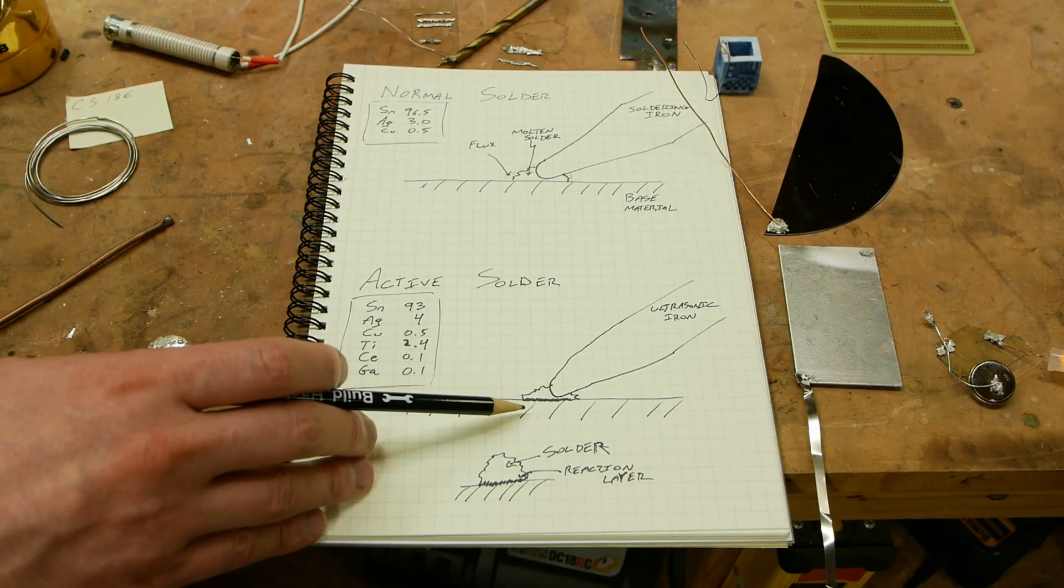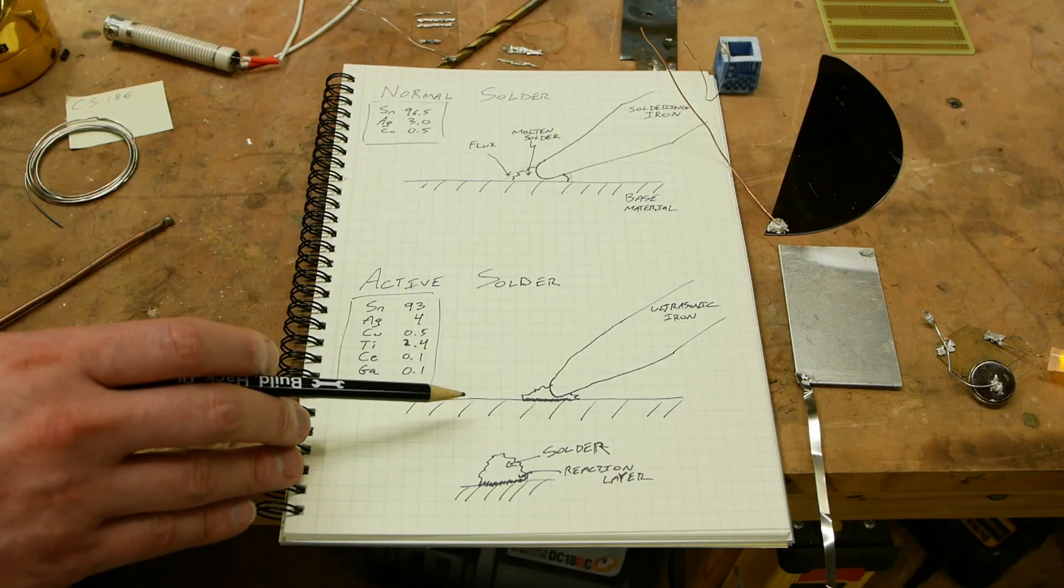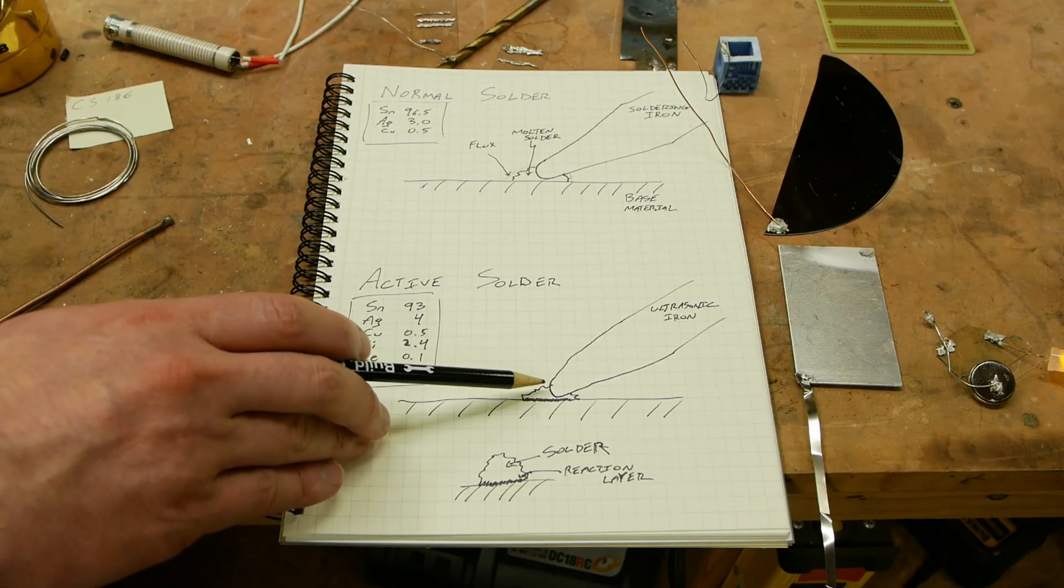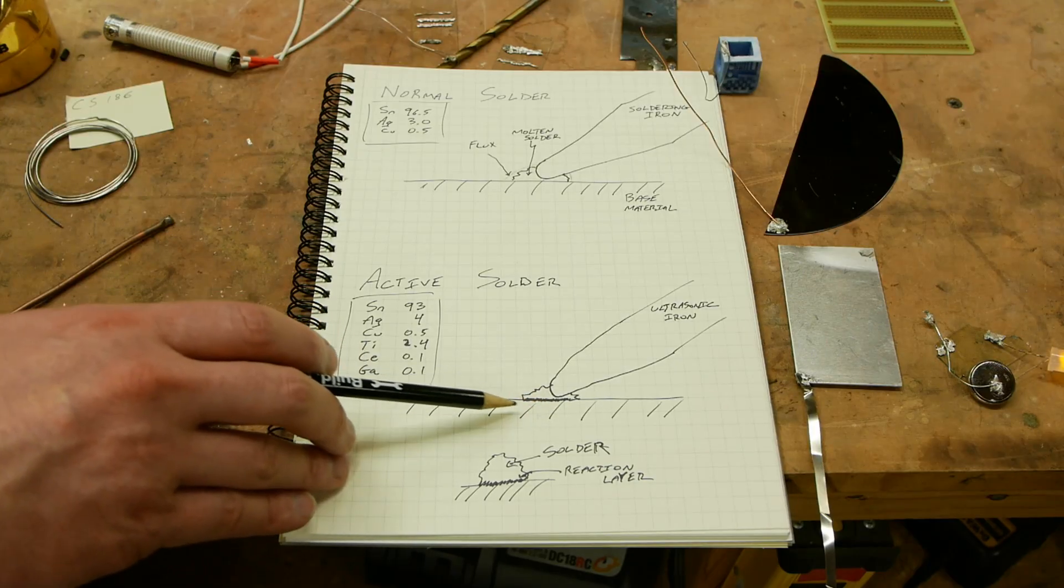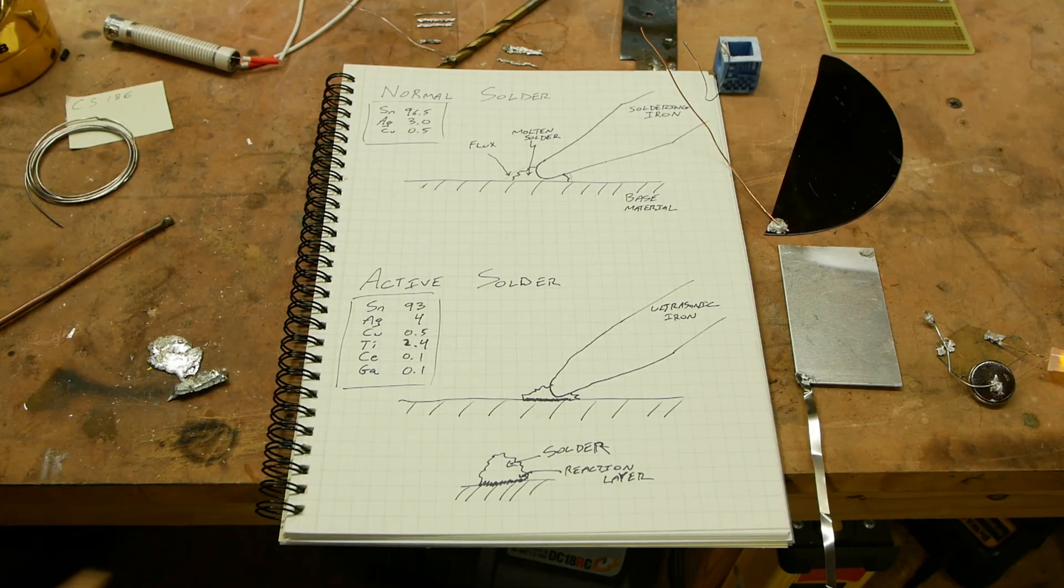And then we wouldn't really have a chance to bond with the surface. What we really need is unreacted titanium in contact with the surface so that it can bond with whatever oxides are going on with the surface here and give us a decent bond.